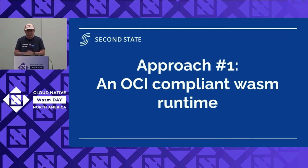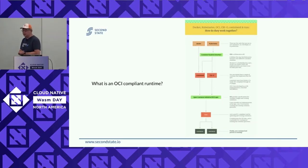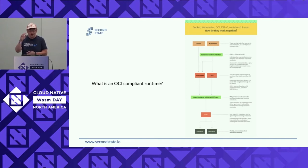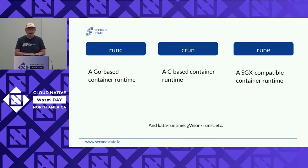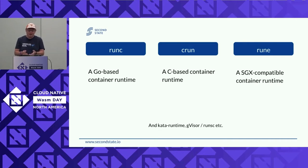The way we did it is we made our entire runtime compliant with OCI. What is an OCI-compliant runtime? You have Docker and Kubernetes at the top, then a Container Runtime Interface — CRI — and underneath that, different runtimes. It all goes down to container runtimes called RUNC. There's RUNC, which is a Go-based container runtime. There's CRUN — a C-based container runtime. There's RUNE, an SGX-based trusted computing environment container runtime. And then there's Kata runtime, gVisor, runsc — a bunch of those. The community has innovated to create different runtimes to run different workloads.